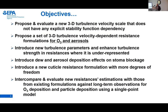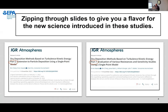We introduce a turbulence velocity parameter to several resistance formulations in dry deposition, and we are introducing dew formation and its impact on resistances, as well as PM deposition. We also have introduced a new cuticle resistance formulation with more degrees of freedom. We want to compare these existing formulations with these updates. Since these are actually two papers condensed to fit in 15-20 minutes, I'll go through some slides quickly. Both papers are in press as of last night and are available online.